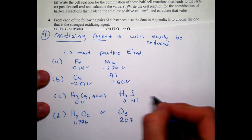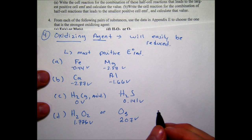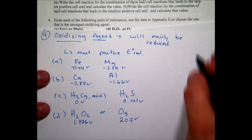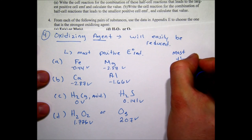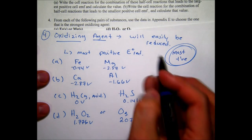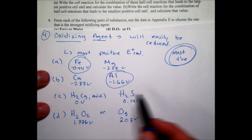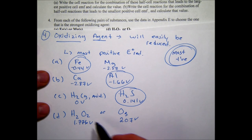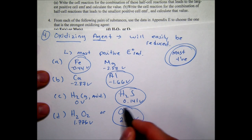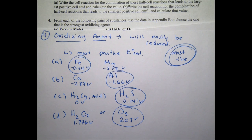The more positive the reduction potential value, the easier it will be to reduce that species — meaning it is a greater oxidizing agent. So we pick the species with the most positive reduction potential from each pair.